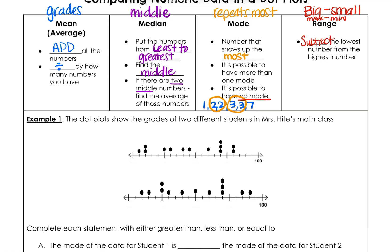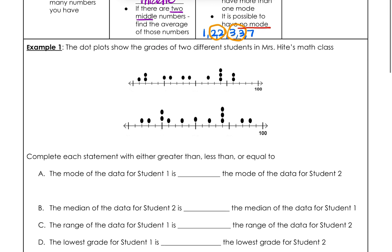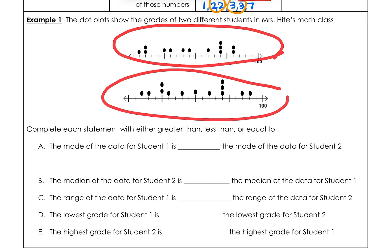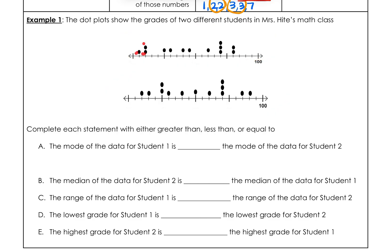Now that we've refreshed our memories on our four vocabulary terms, let's go down and apply that knowledge to this question. It says the dot plot shows the grades of two different students in Miss Height's math class. This is student number one and this is student number two — each dot represents a grade.